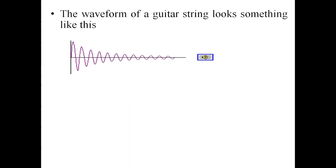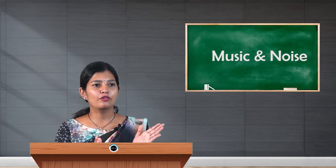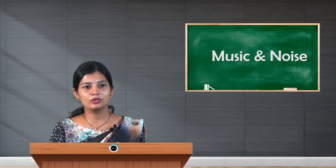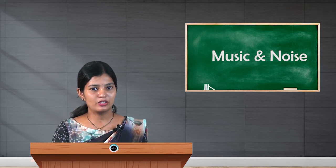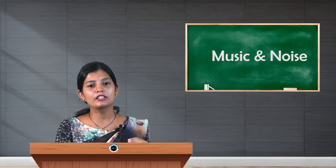The waveform of a guitar string looks something like this — very nice and regular. The guitar string makes a continuous, regular series of repeated cycles which we hear as a smooth and constant musical tone. By noting the differences between the waveforms, we can see that smooth, continuous, and regular waves produce a musical tone, while the door slam produces a harsh sound. This is what makes the difference between a musical tone and noise.